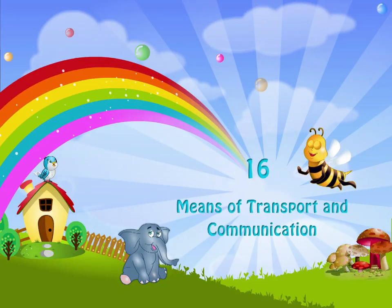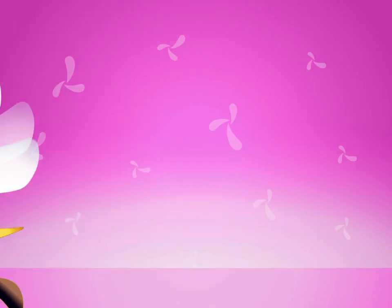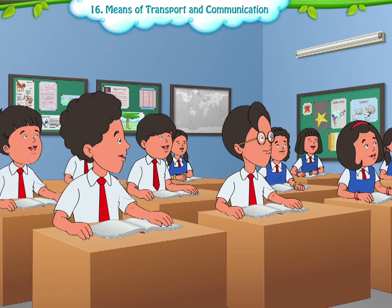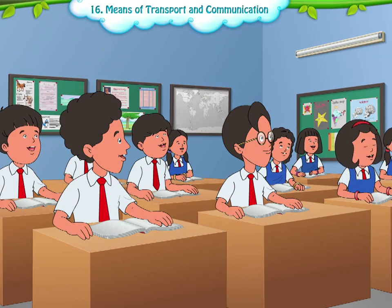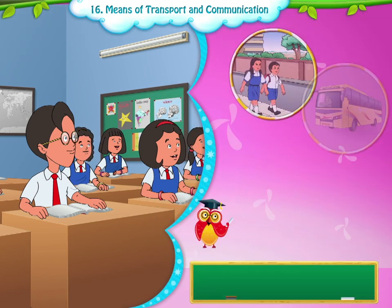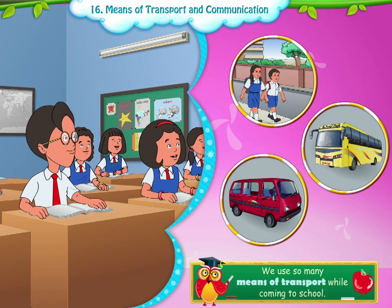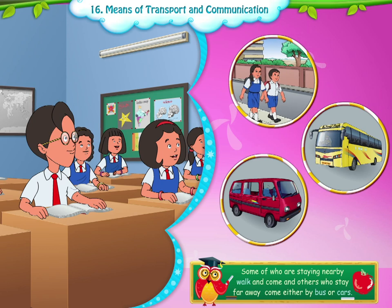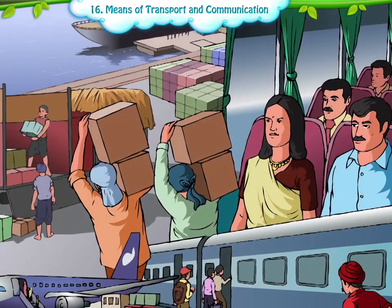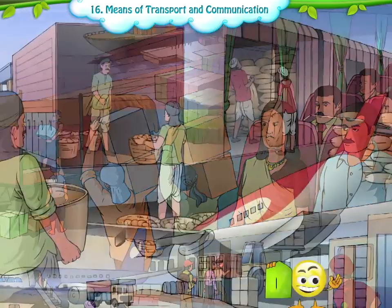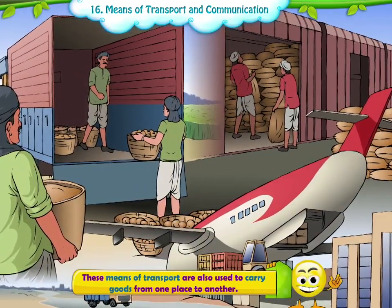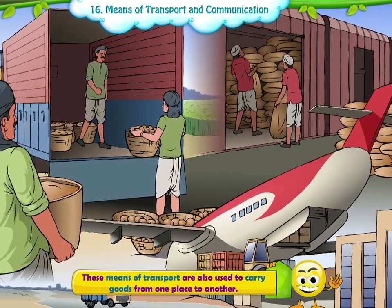Chapter 16: Means of Transport and Communication. Children, how did you come to school today? We use so many means of transport while coming to school. Some of us who stay nearby walk, and others who stay far away come either by bus or cars. All of us move from one place to another, and these means of transport are also used to carry goods from one place to another.